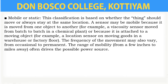The second classification is mobile or static. This classification is based on whether the thing should move or always reside in an identical location. A sensor might also be mobile due to the fact that it is moved from one object to another, or because it is connected to a moving object.